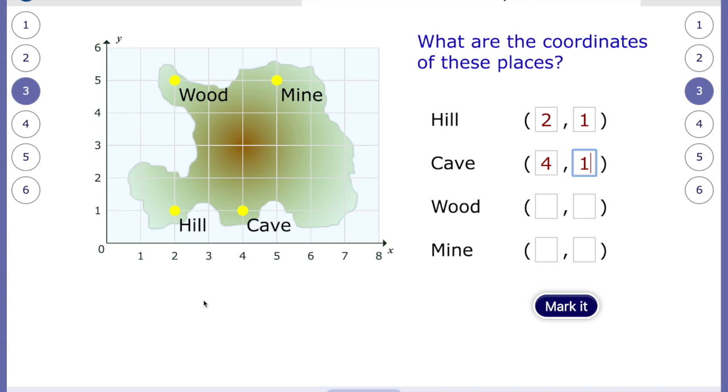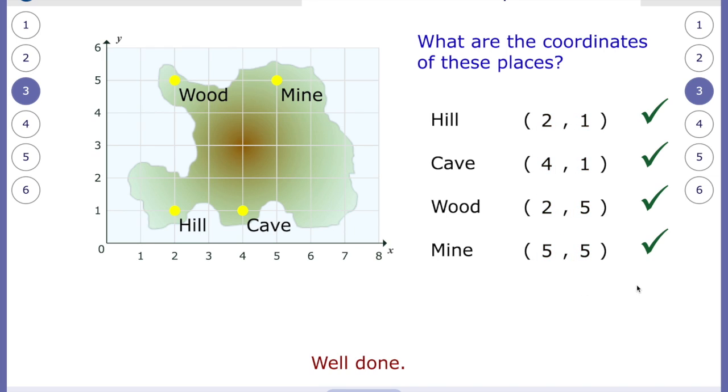Now we've got the wood. So here's the wood here on this map. We're going to read up or down the point here to two. And then across on the y-axis is two, five. And then lastly, we have the mine, which is five, five. Let's see if we're right. Hooray! We are.